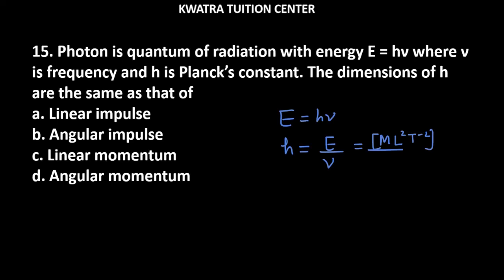And what is the dimension of ν? Frequency is 1 over time period, so we can write T raised to power minus 1. Now we have E over ν equals ML² T⁻² divided by T⁻¹, which gives ML² T⁻² plus 1, so it's T minus 1.